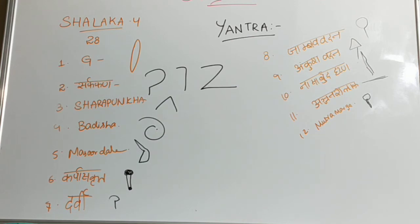There were 28 types of Shalaka Yantra. The first one is Gandu Padamukha Shalaka Yantra. Gandu means atom. The diagrammatic representation is shown there. Gandu Padamukha — they were 2 in number.